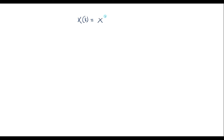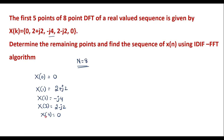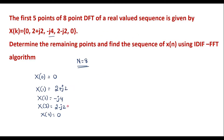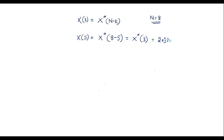By the symmetry property of DFT, we know that X(k) = X*(N-k), where star indicates complex conjugate. Here N=8. For k=5: X(5) = X*(8-5) = X*(3). Since X(3) = 2-j2, its complex conjugate is 2+j2. Therefore X(5) = 2+j2.